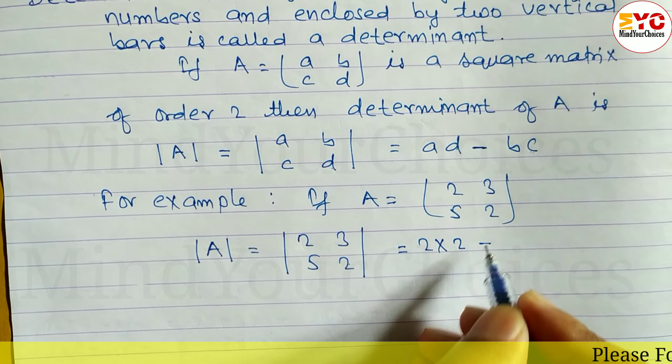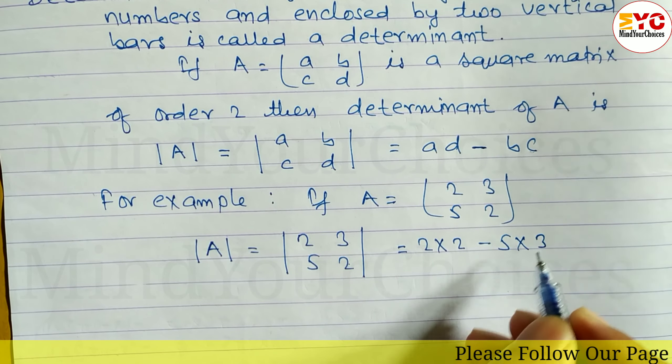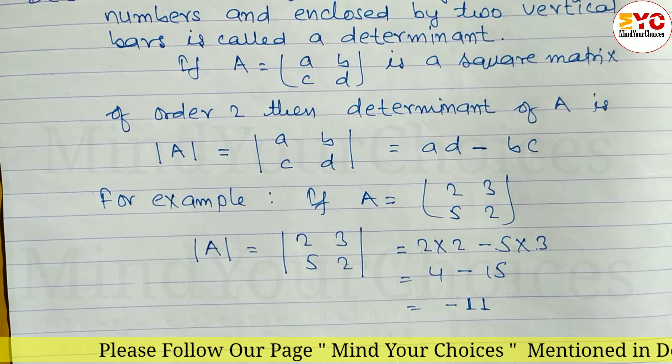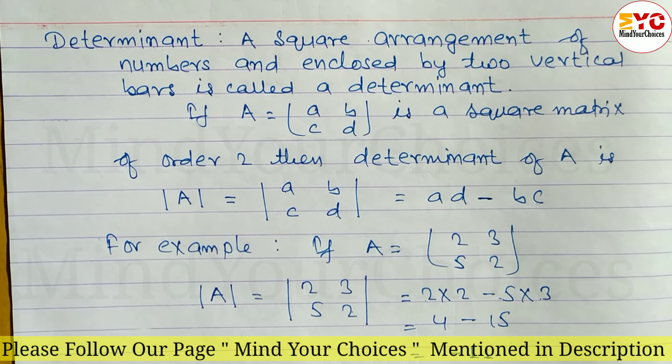To find the determinant, multiply the main diagonal: 2 into 2, minus the non-diagonal: 5 into 3. First write the main diagonal product minus the non-diagonal product. 2 into 2 equals 4, minus 5 into 3 equals 15. When you subtract, we get -11.